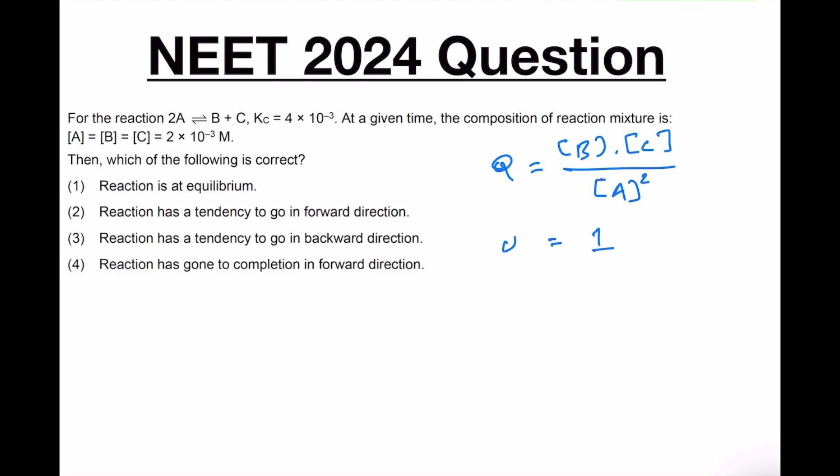So your Q value is equal to 1. We know that if Kc is equal to Q, then the reaction is at equilibrium. But in this case, the Kc value is 4 × 10^-3.